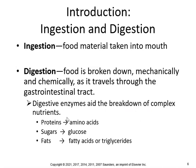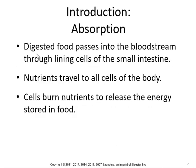We break down proteins into amino acids, we break down sugars into glucose, and we break down fats into fatty acids or triglycerides. Most nutrient absorption takes place in the small intestine. Digested food passes into the bloodstream through the lining cells of the small intestine, and nutrients travel to all the cells of the body where they are burned to release the energy stored in food.